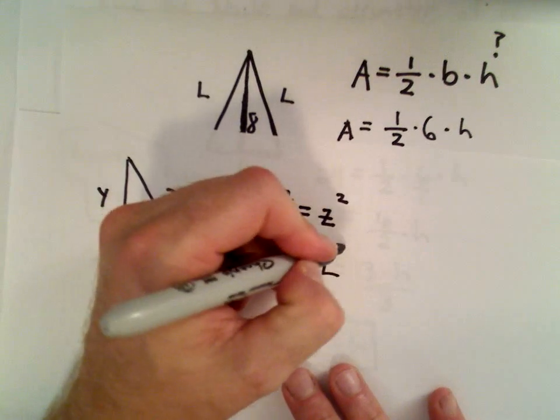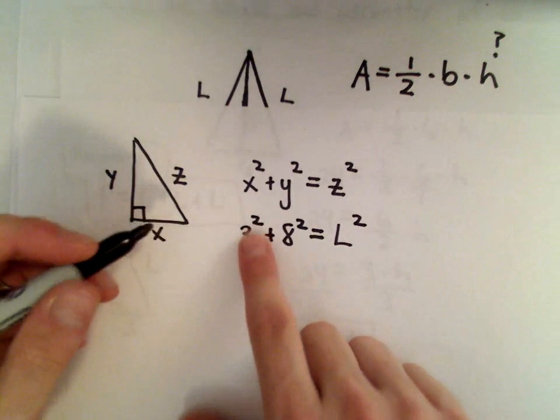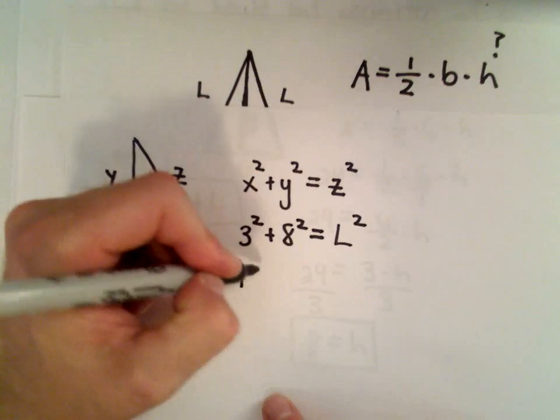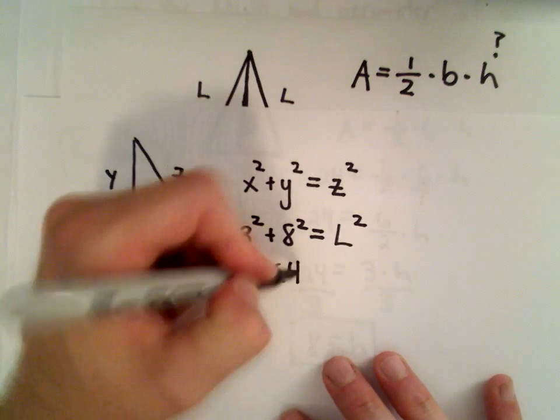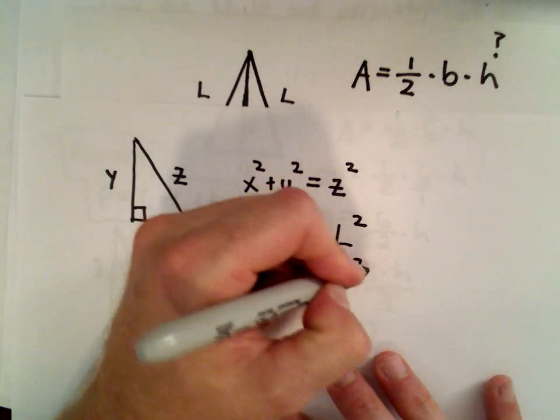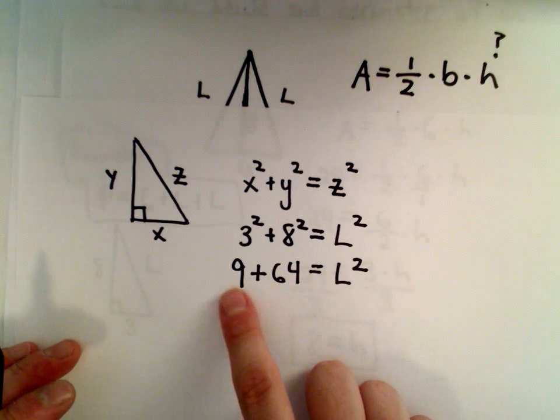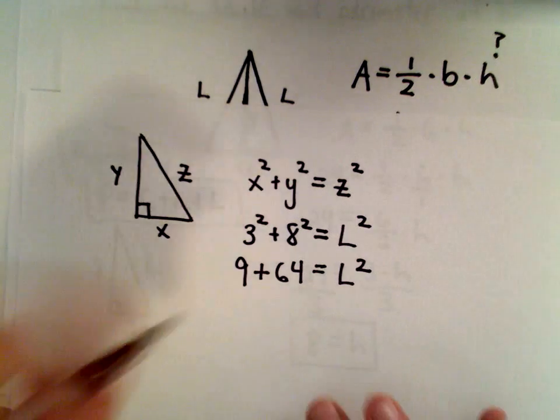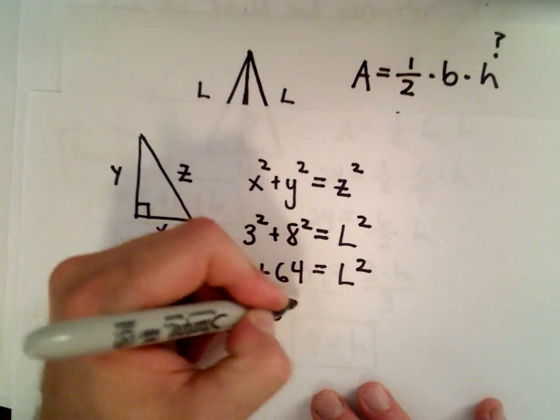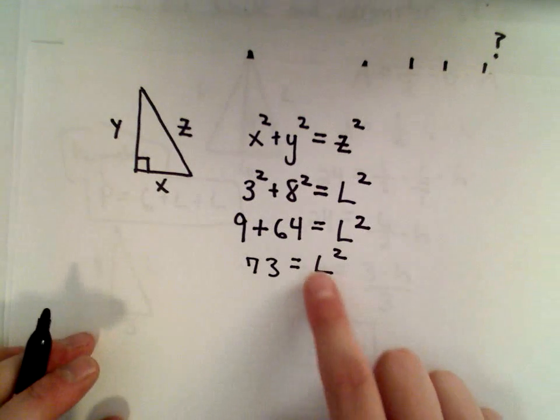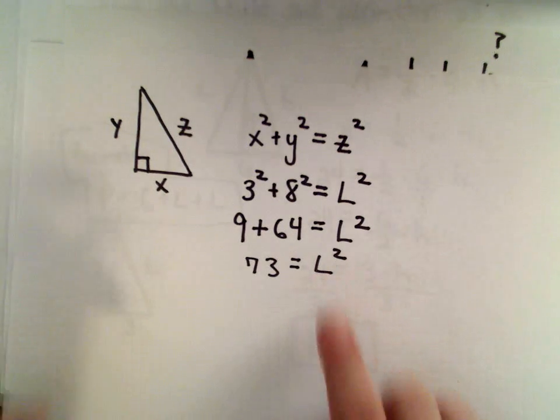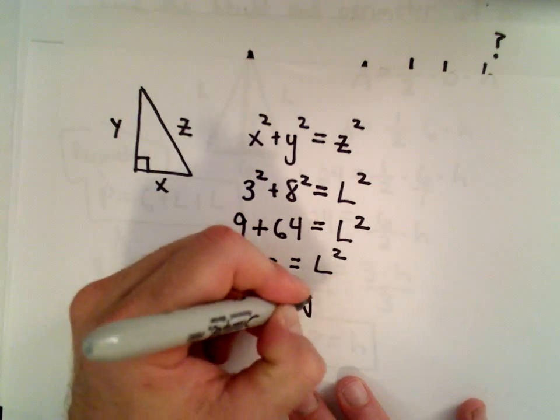Okay, so that's going to equal L squared. Well, let's see, 3 times 3, that's 9. 8 squared, that's 8 times 8, that's 64. Okay, so we're getting pretty close. 9 plus 64, that's going to give us 73. I'm going to take the square root of both sides. Since L is being squared to get the L by itself, I'll take the square root.